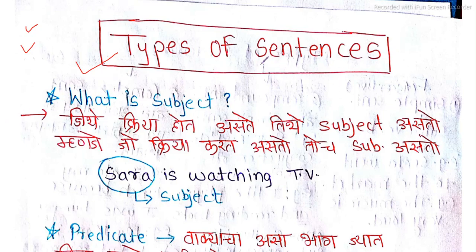So what is a sentence? What is a group of words? A group of words which has a meaning — the meaning of the group of words. That is what a sentence is.